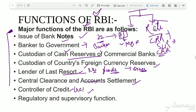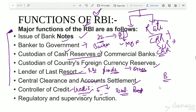Using both quantitative and qualitative techniques, RBI can regulate the total money supply. RBI pumps money into the economy during a busy season and withdraws money during a slack season. The regulatory and supervisory function means RBI regulates and supervises all banks. If any bank is doing something wrong, RBI can intervene. RBI also grants licenses to commercial banks and cooperative banks for establishment and branch expansion, and helps banks improve their standards and methods of operations.